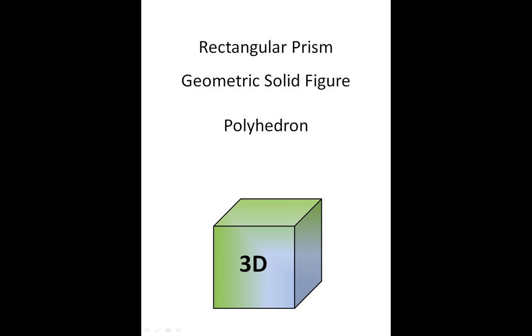The basic building block that we'll be working with today is the rectangular prism, a geometric solid called a polyhedron and it's part of our series of 3D shapes that we'll be working with.